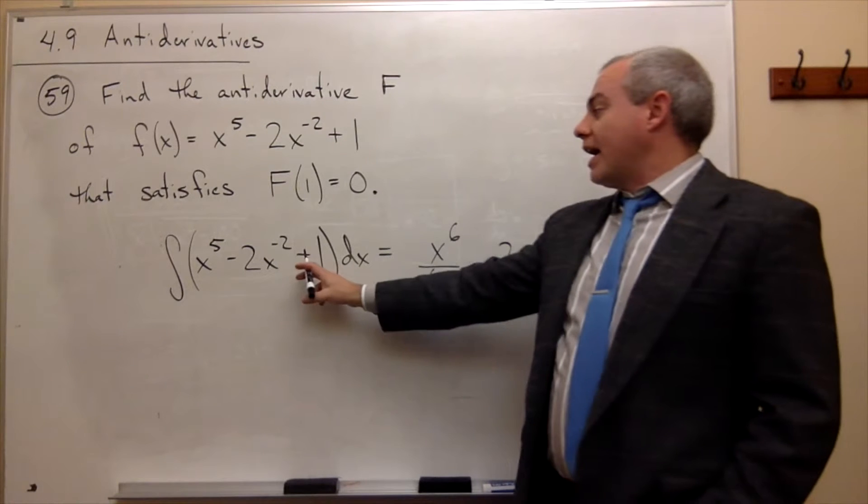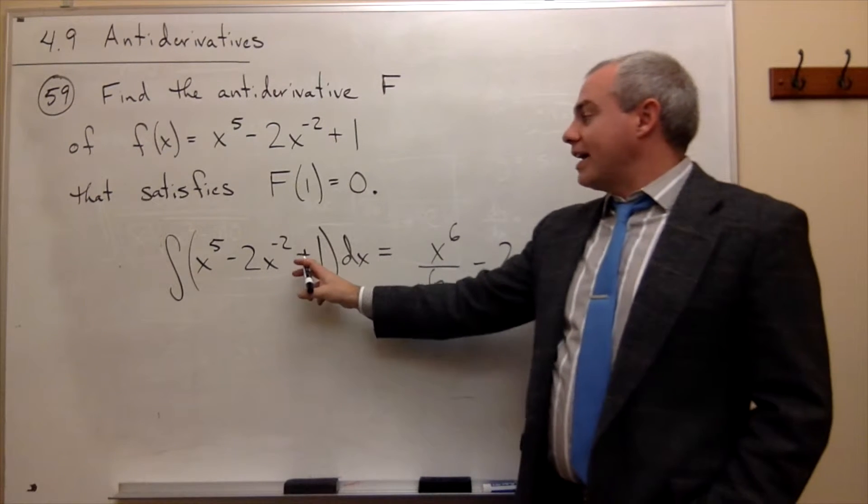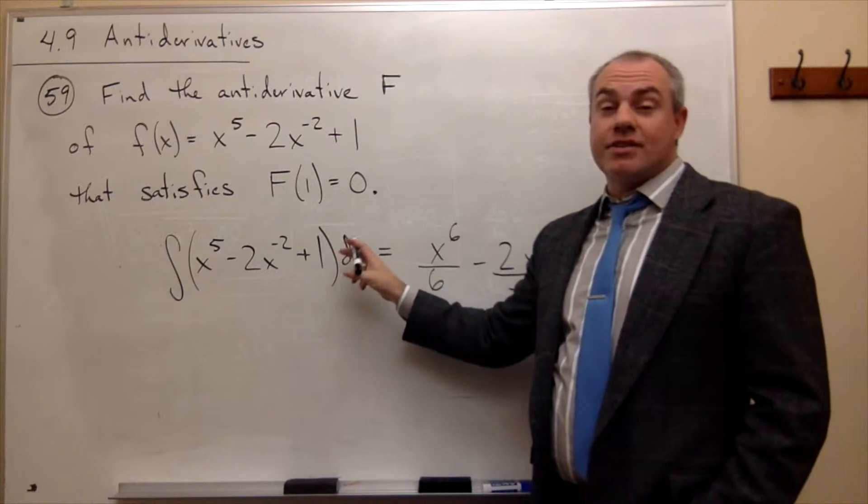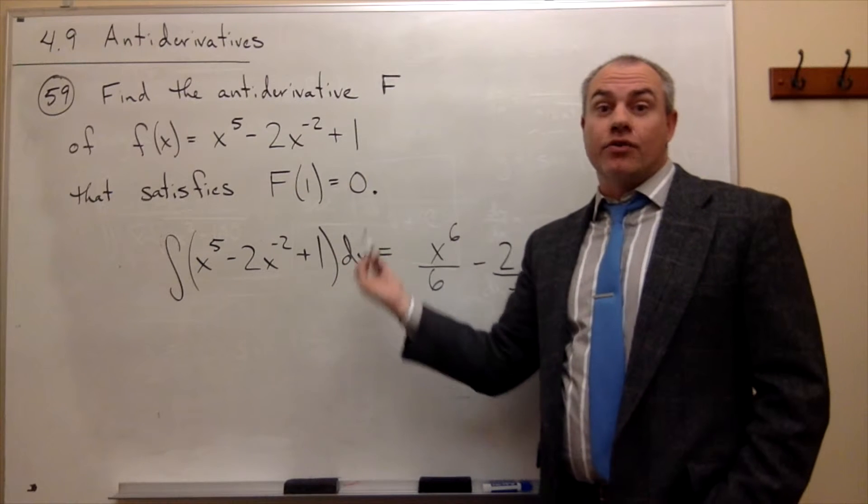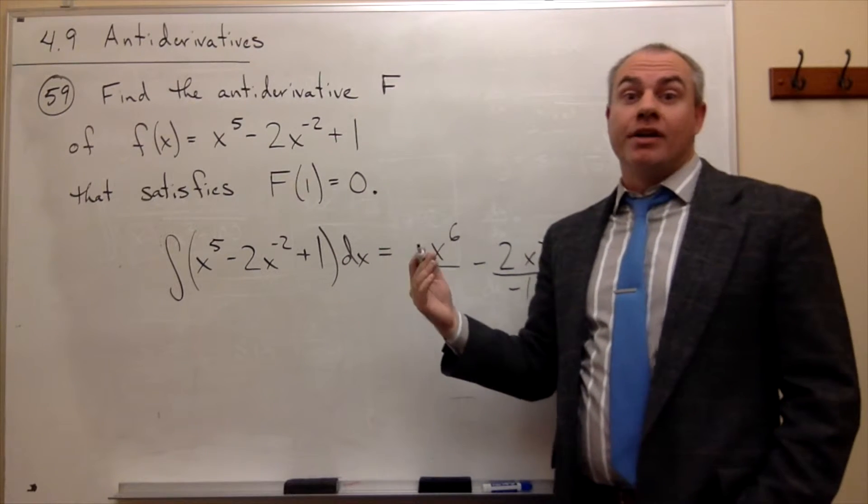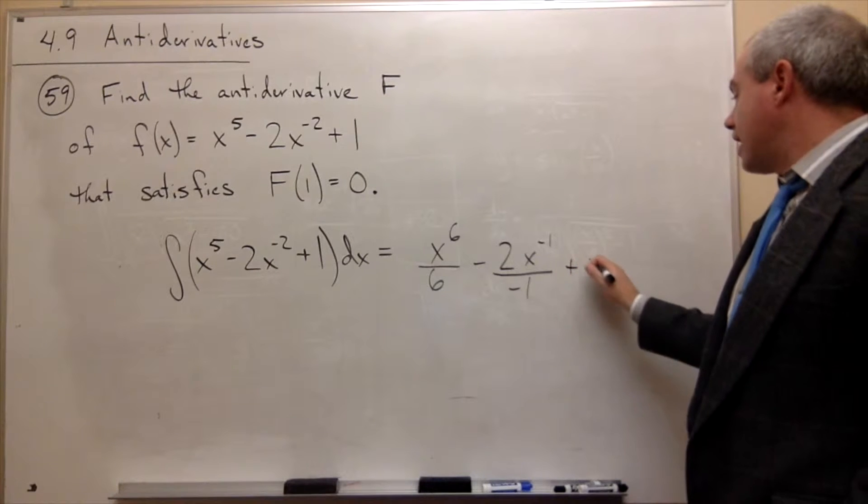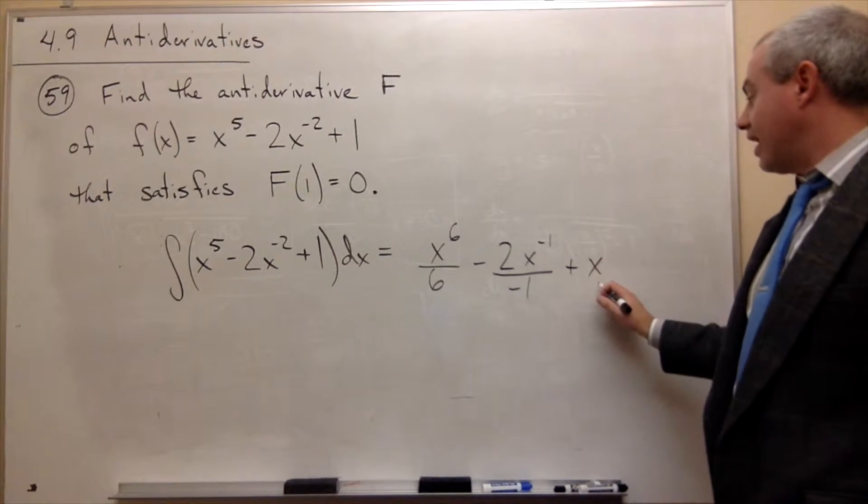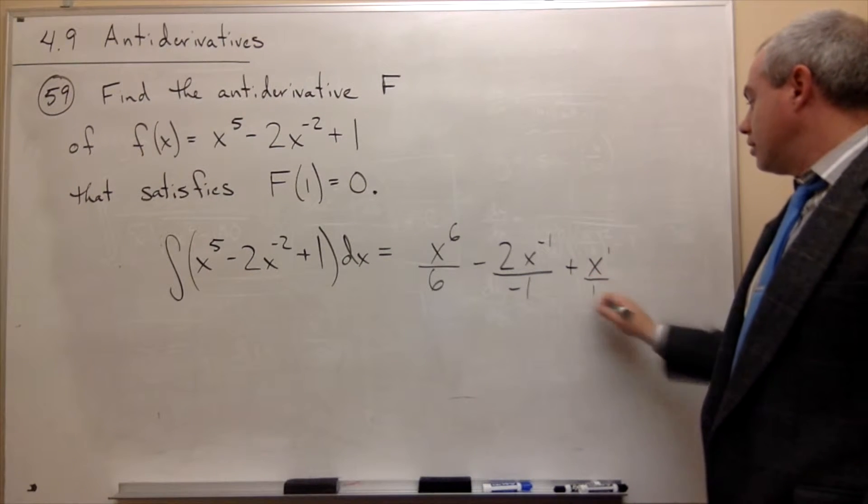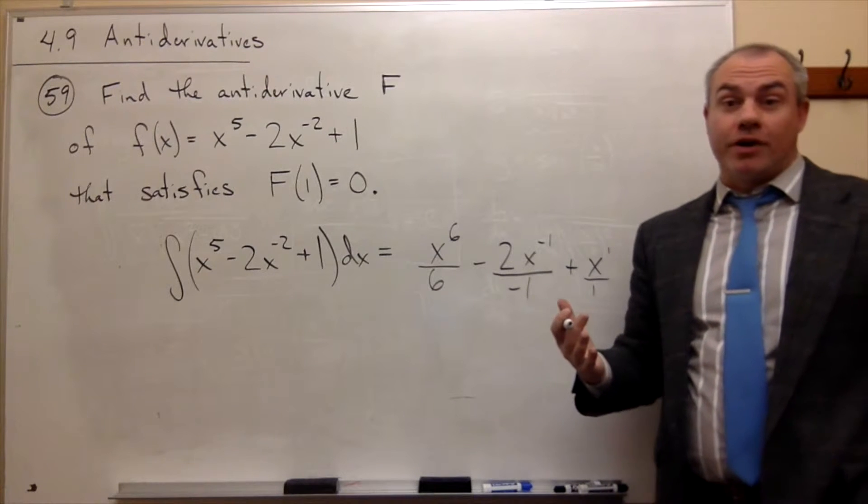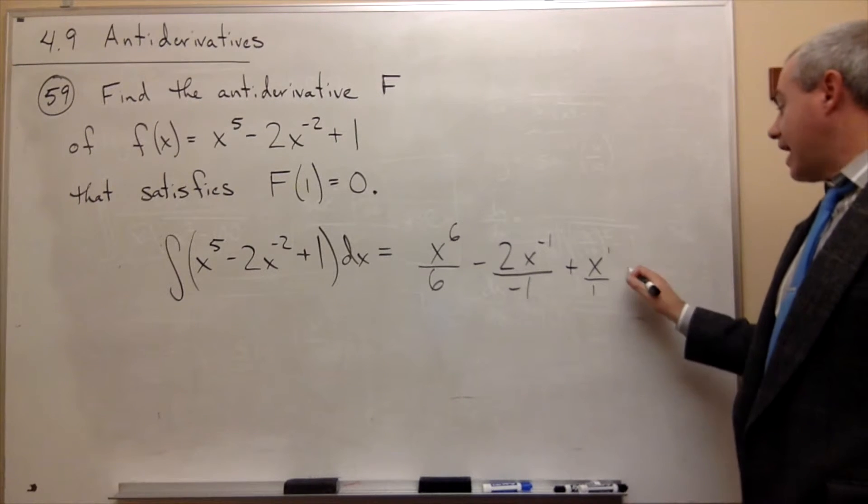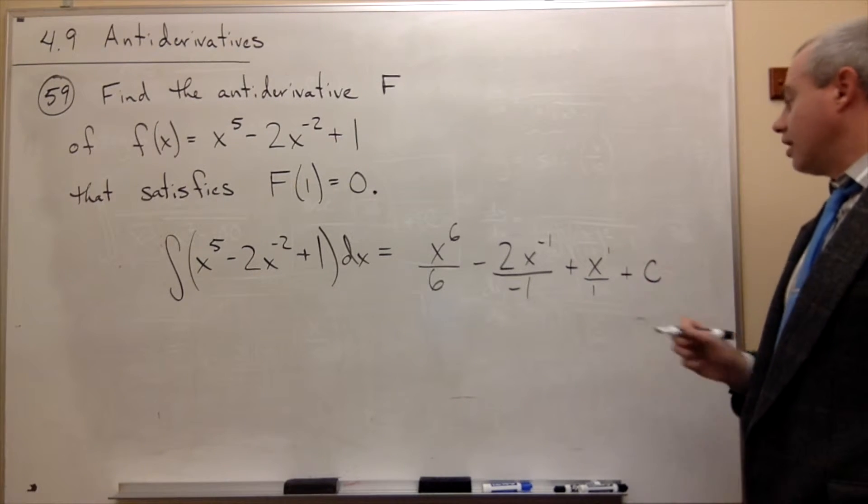And then finally, I have plus 1, if you'd like, this is plus 1x to the zero power, so I need to raise the power of x by 1 to x to the first, so I get plus x to the first divided by 1, or just x if you prefer. And then I need to add my constant of integration.